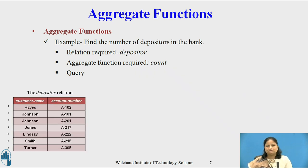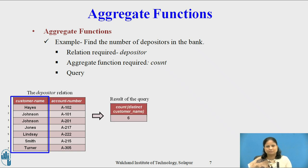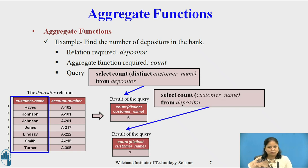Third example: find the number of depositors in the bank. The relation required is Depositor and the aggregate function required is Count. We apply Count to the field Customer Name of the relation Depositor. The relation consists of 7 tuples but the result considers distinct customer names and returns 6 tuples. The query is: SELECT COUNT(DISTINCT customer_name) FROM depositor. The keyword DISTINCT is used for the elimination of duplicates. If we omit DISTINCT, the result contains all 7 tuples.